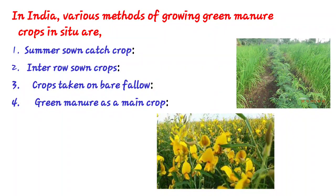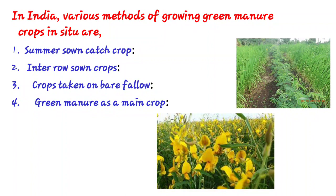The disadvantage of this method is that the cultivator loses one kharif crop or one kharif season. The fourth method is green manure as a main crop. This is adopted only on very poor sandy soils or for reclamation of saline and alkaline soils; under these conditions dhaincha is raised as the main green manure crop.